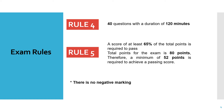Rule five talks about the score — you need at least 65 percent of the total points to pass the exam. The total points for your exam would be 80 points and you need to achieve at least 52 points to pass. The point to be noted here is that there is no negative marking.